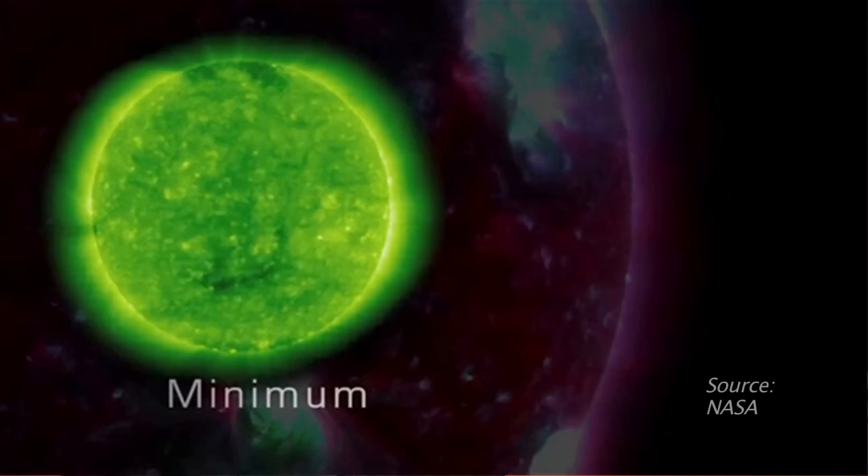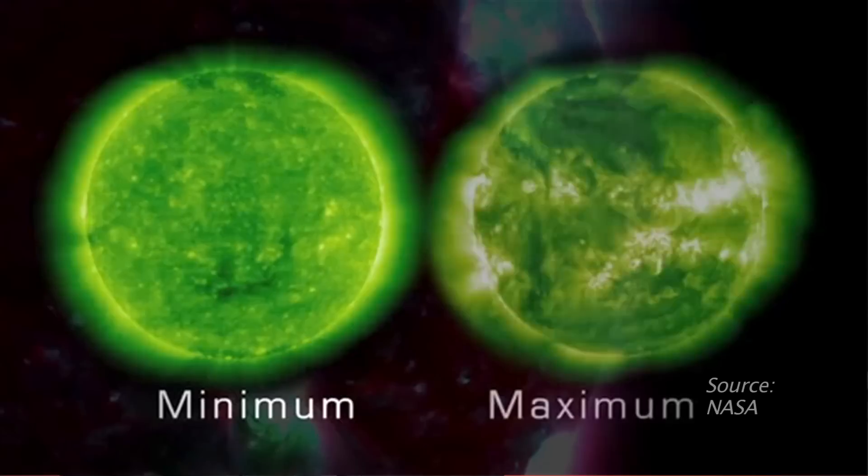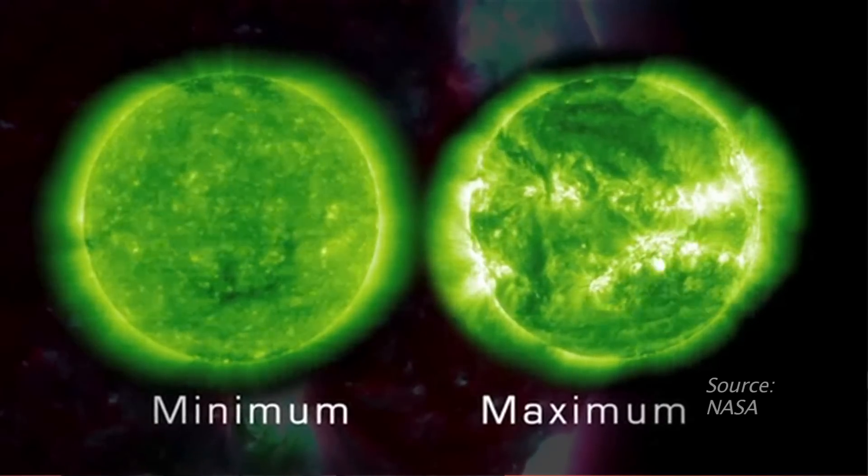So the sun goes through typically an 11-year cycle of low activity and high activity. Currently we're coming out of a period of very low activity that ended about a year or so ago. And so we're heading up towards the solar maximum period.